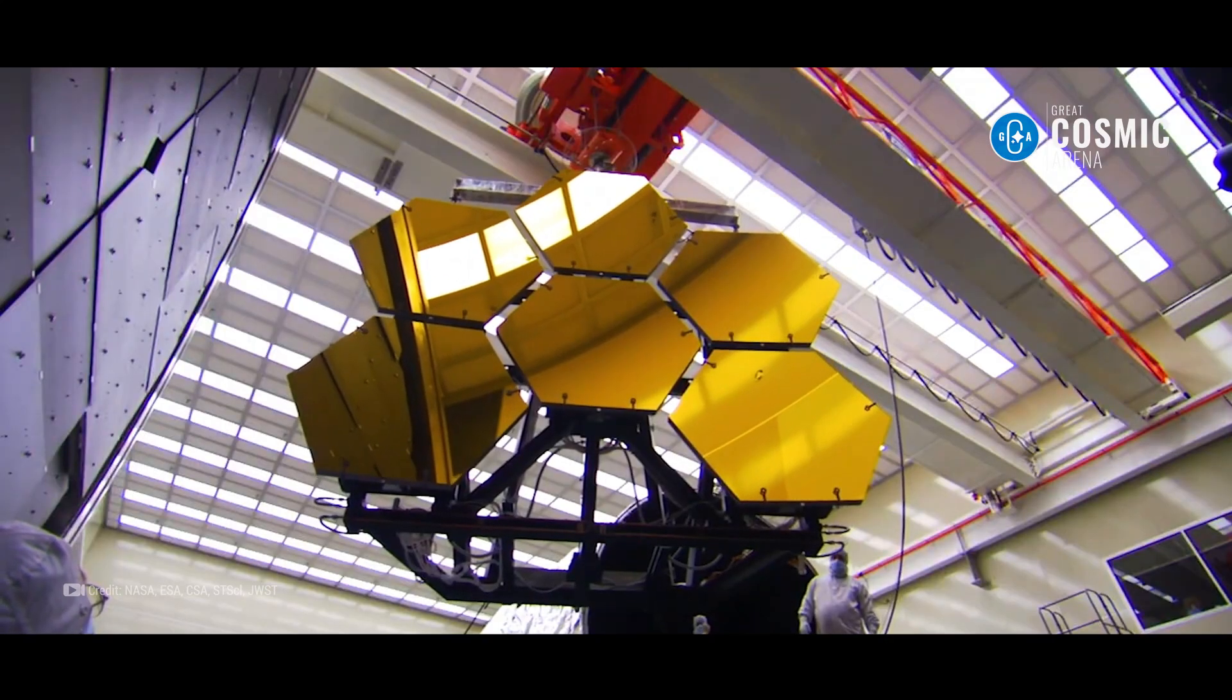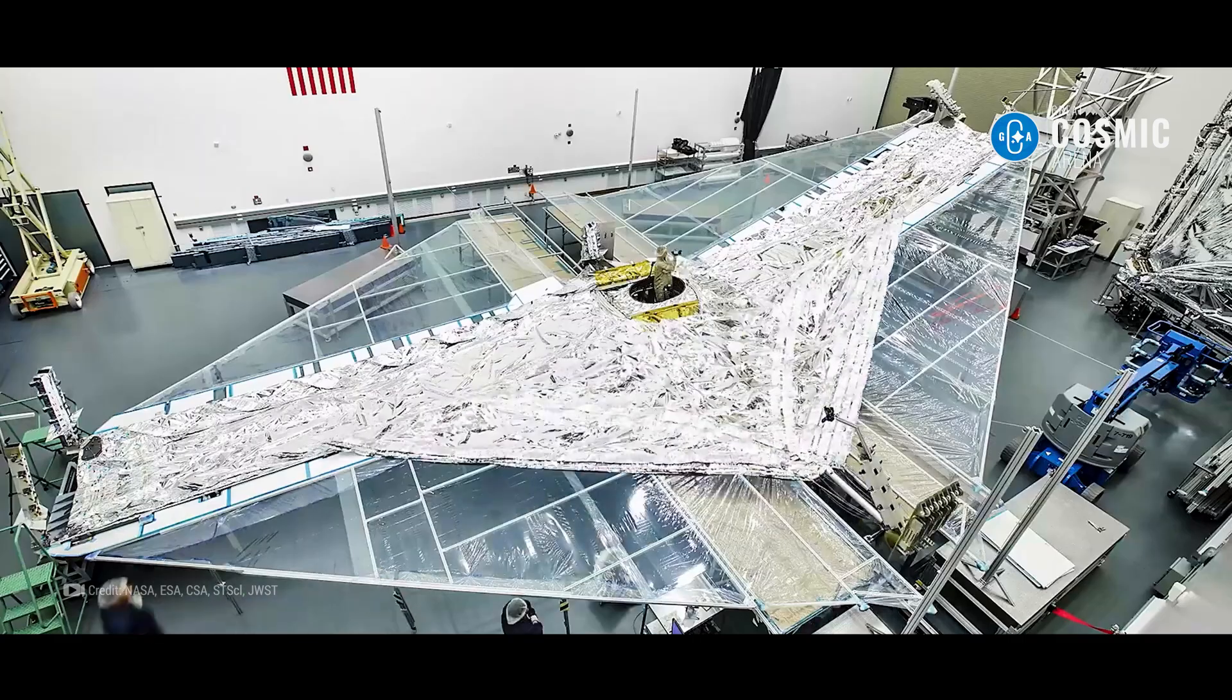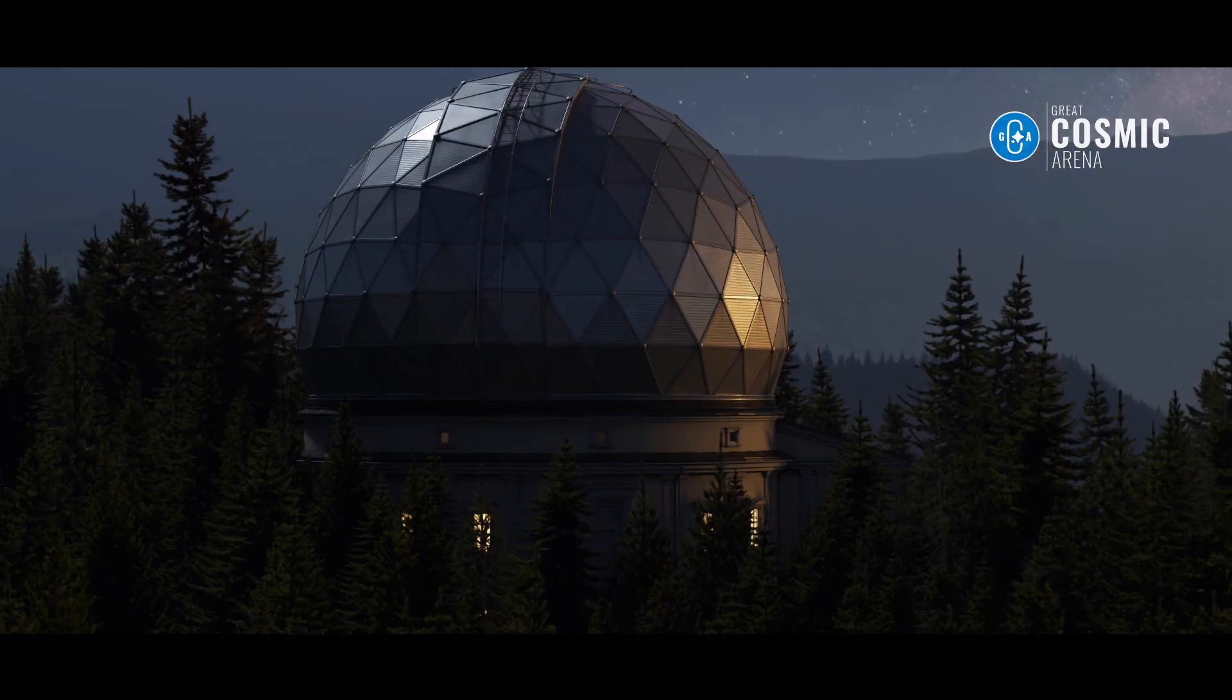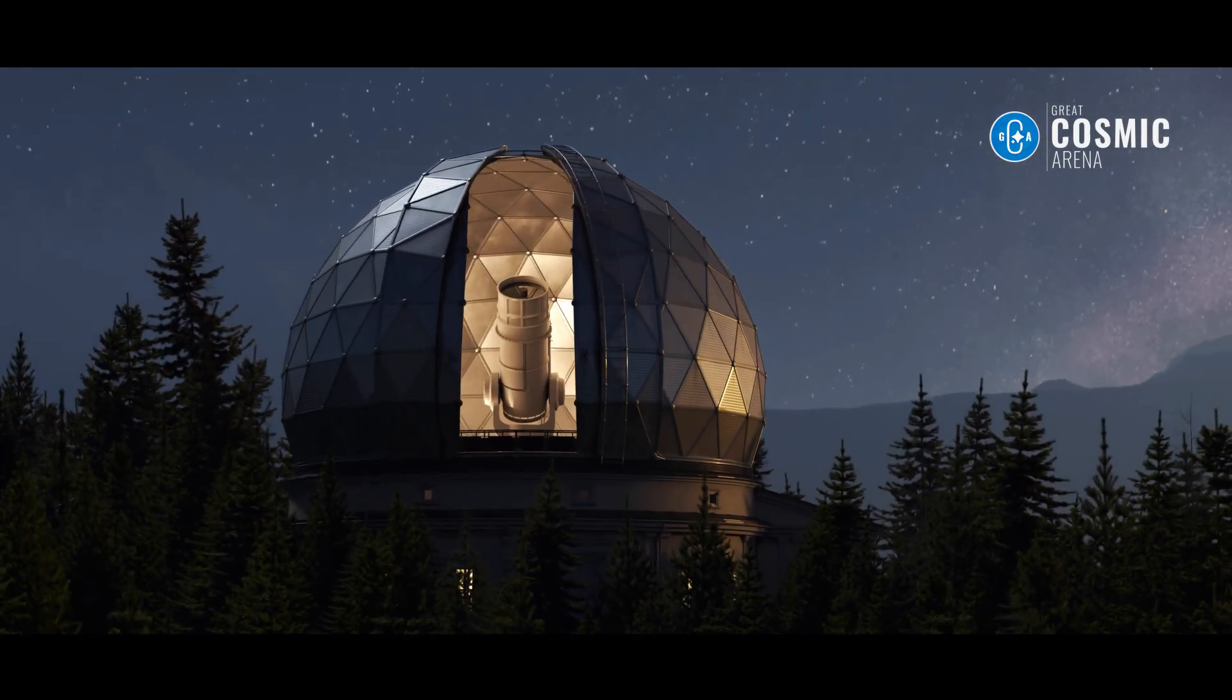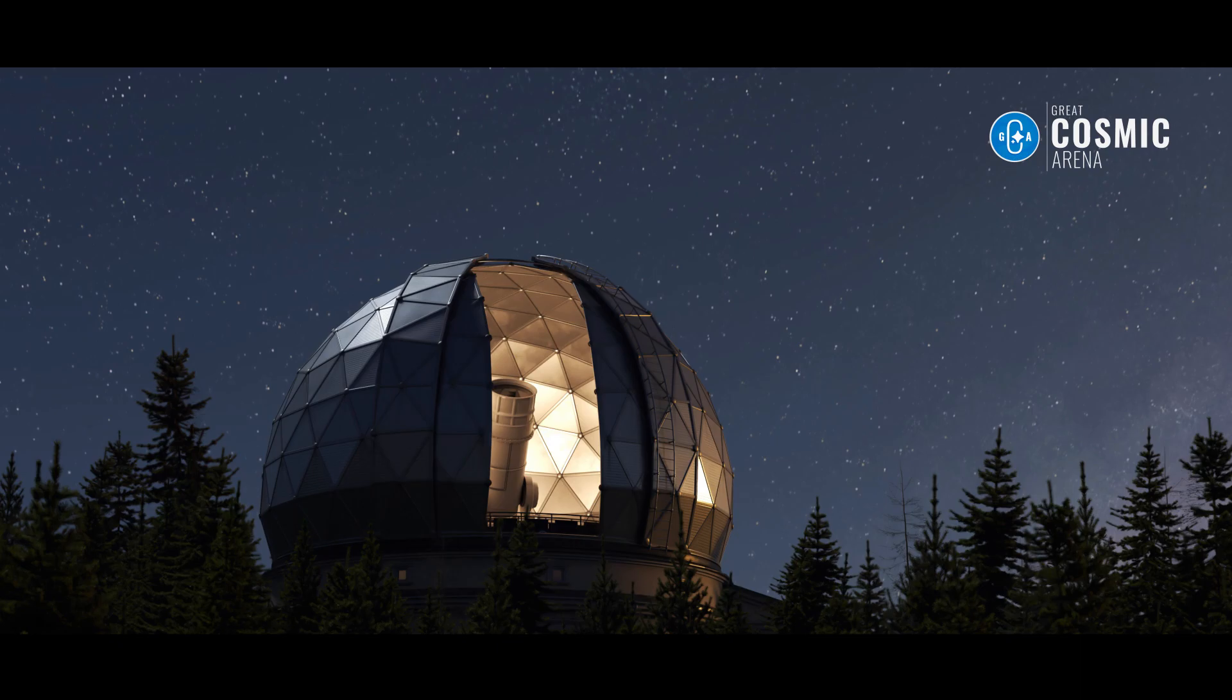So while the James Webb Space Telescope is an incredible tool for exploring the universe, it's not the best choice for observing our own solar system. But don't worry, we still have plenty of other telescopes and instruments that are perfect for the job.